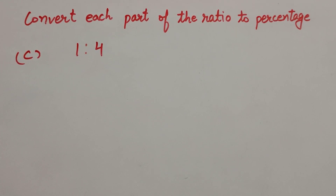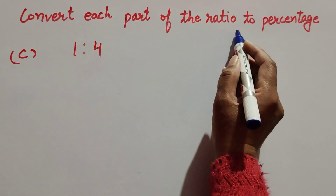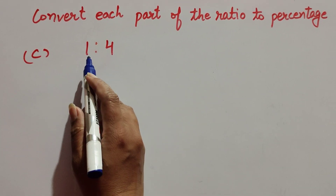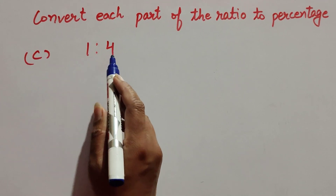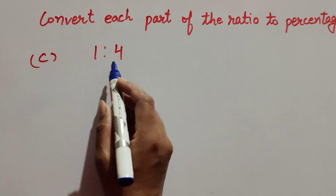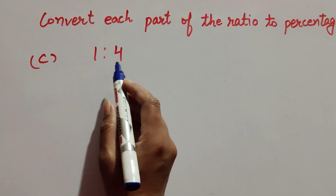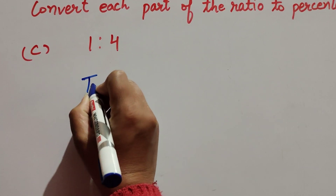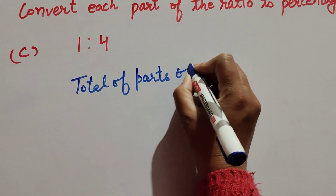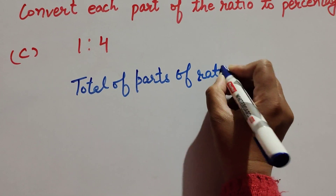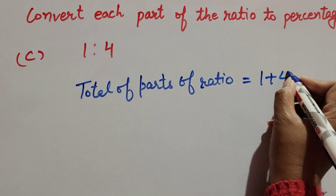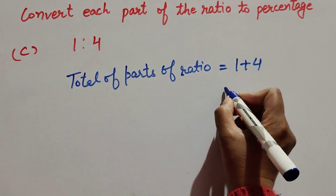Hello friends, welcome to my channel. In this video we discuss converting each part of a ratio to percentage. Given ratio is 1:4, so we change all the parts of this ratio into percentage. To change these parts into percentage, first we find the total of all the parts of the given ratio. Total of parts of ratio is equal to sum of all parts: 1 plus 4, which is equal to 5.